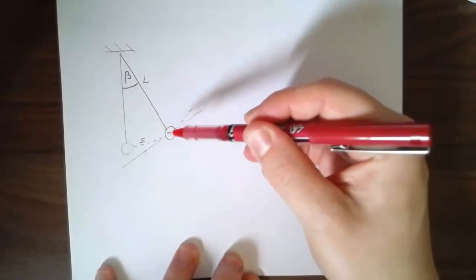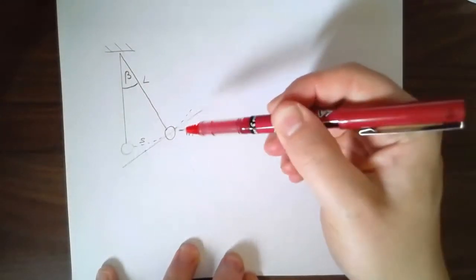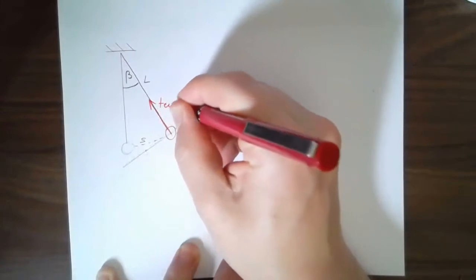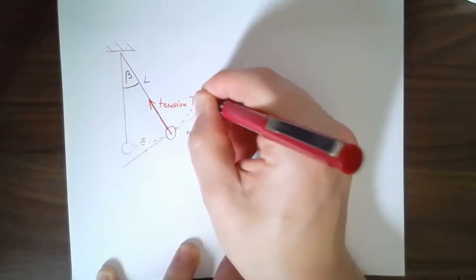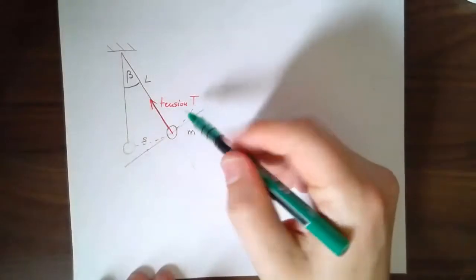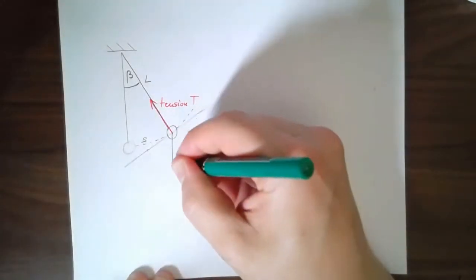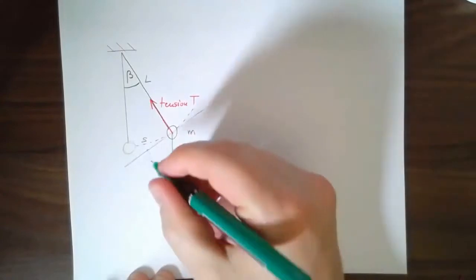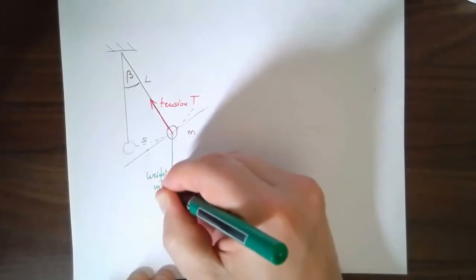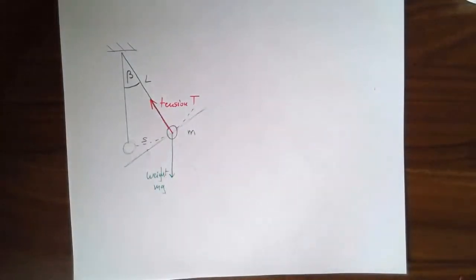Now, what forces are acting on this? Hopefully you come to this conclusion that there are two of them. There is going to be the tension in the string. Let's label that T. We don't want to confuse it with the period of the oscillation, but we won't. T right now means tension. Then, of course, there's the weight. The weight, I'm just going to write mg because that's what it is. Okay, so those are the only two forces that are acting.